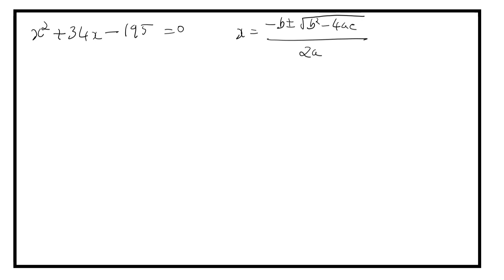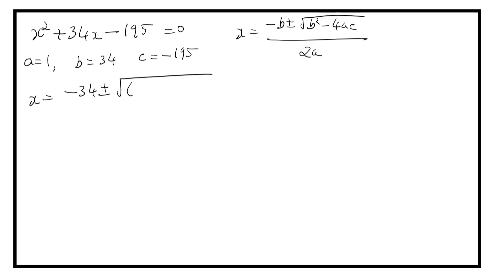Here A is equal to 1, B is equal to 34, and C is equal to minus 195. Now let us apply the formula. X is equal to minus 34 plus or minus square root of 34 square minus 4 into A into C, upon 2 into 1.